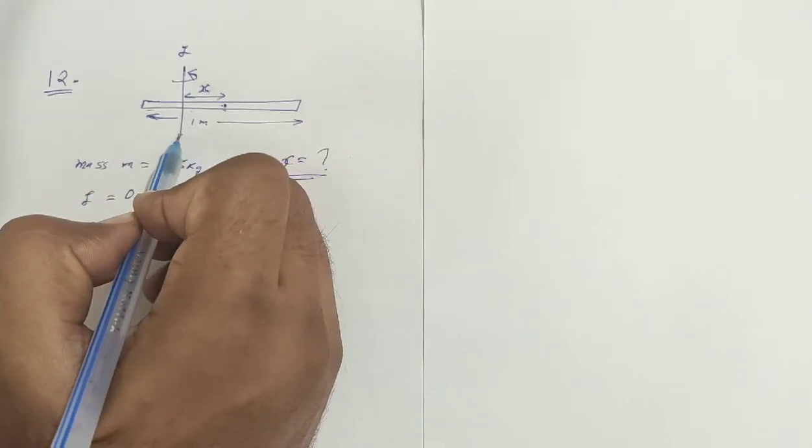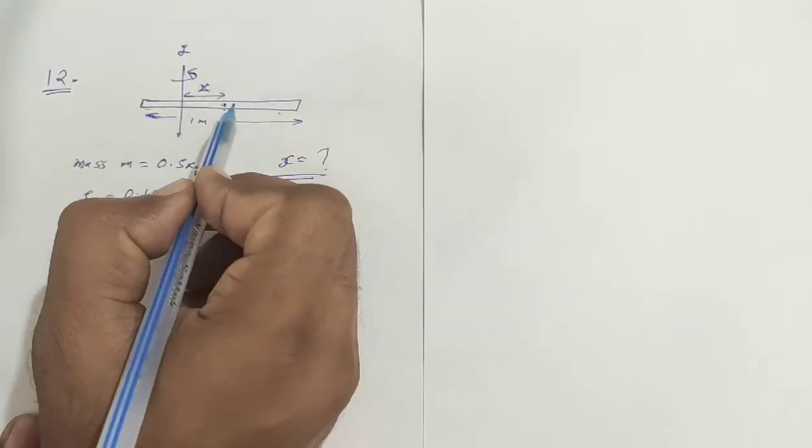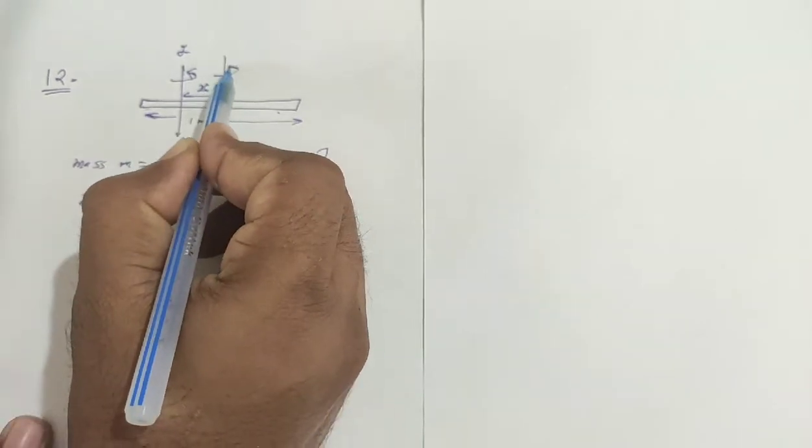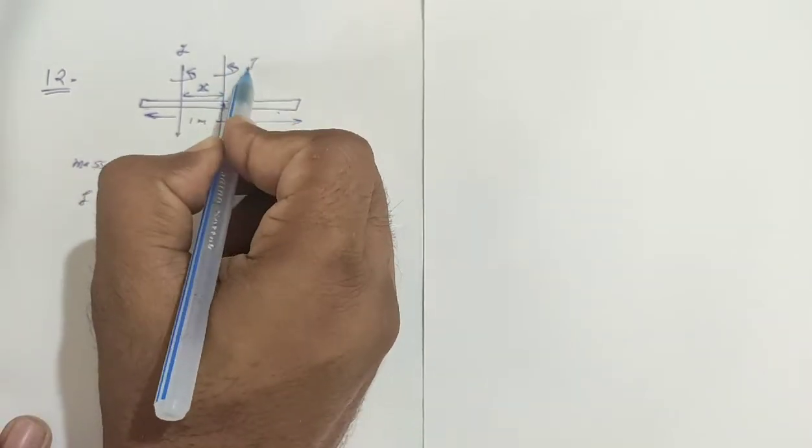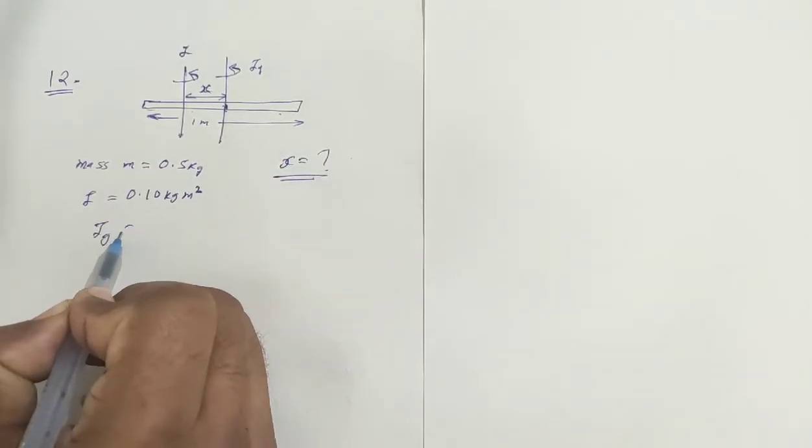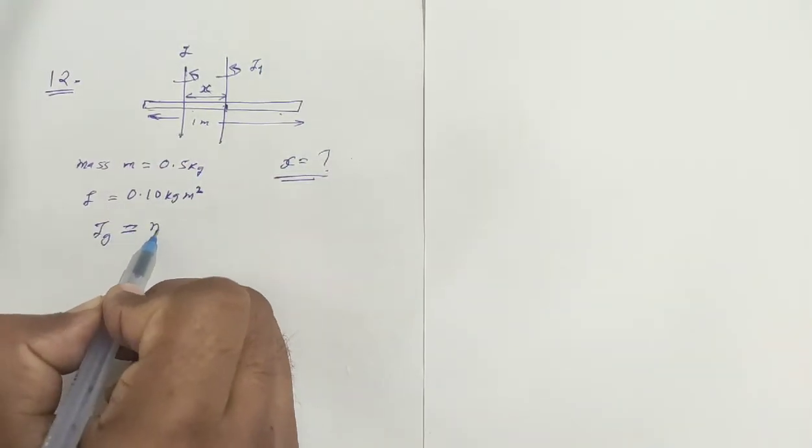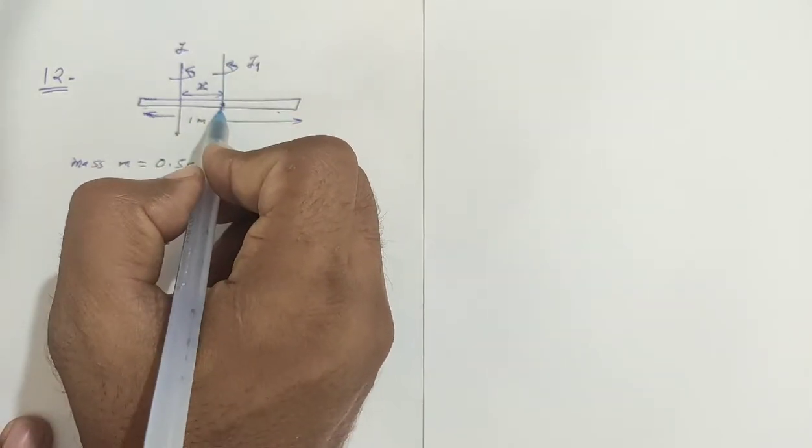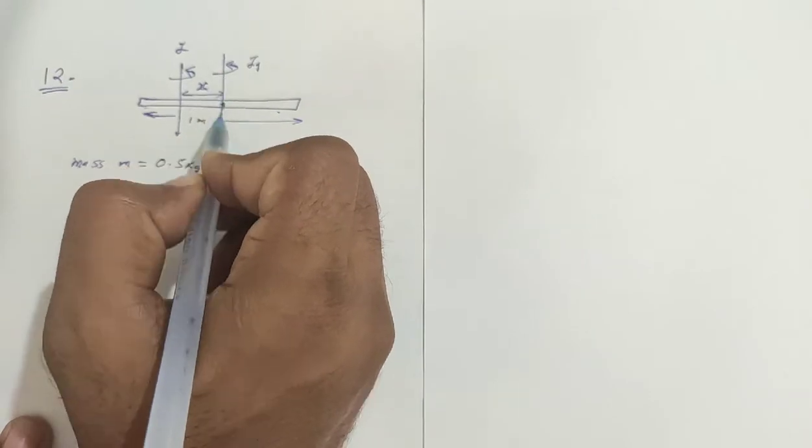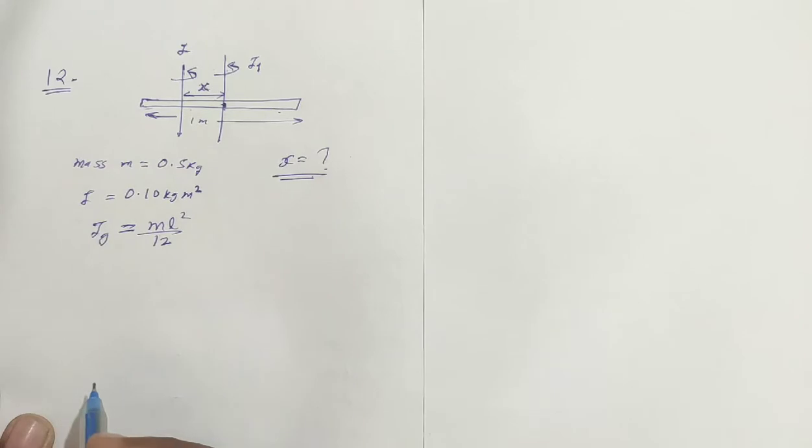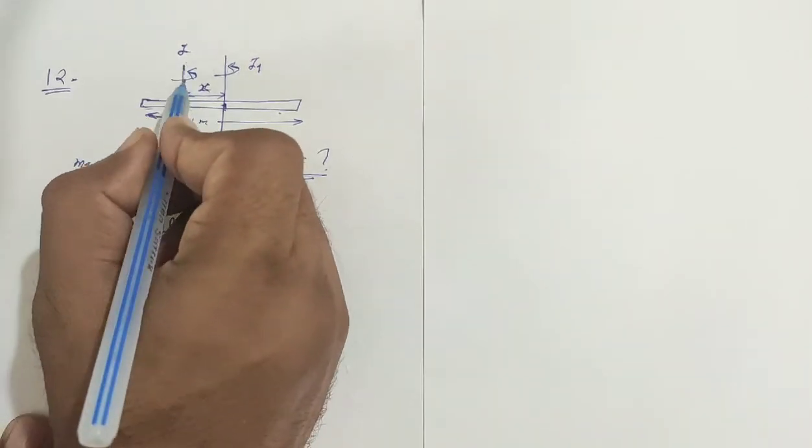How will we get this moment of inertia? We know that the moment of inertia about the center, what will be the moment of inertia? It will be M L squared by 12. This is where the center is. So the moment of inertia at center is M L squared by 12. Now we have to find it here.